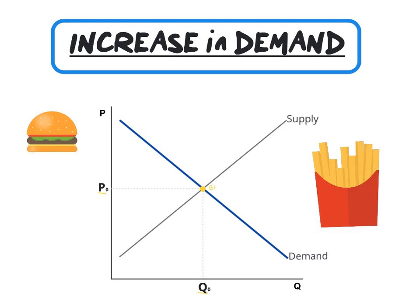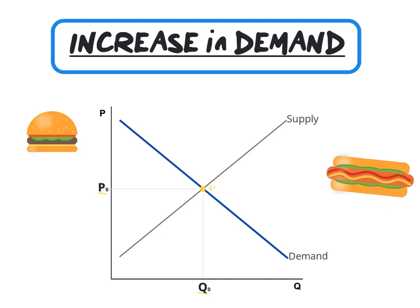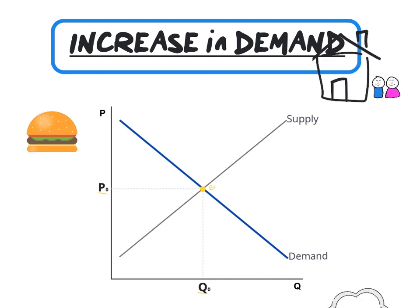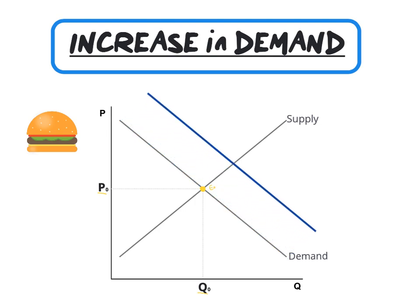An increase in demand can be caused by: a decrease in the price of a complement good, an increase in the price of a substitute good, an increase in consumer income, an increase in household size, and an improvement in taste and preferences for burgers. An increase in demand is illustrated as a rightward shift of the demand curve. The new equilibrium point is at E1 with the new demand curve D1.